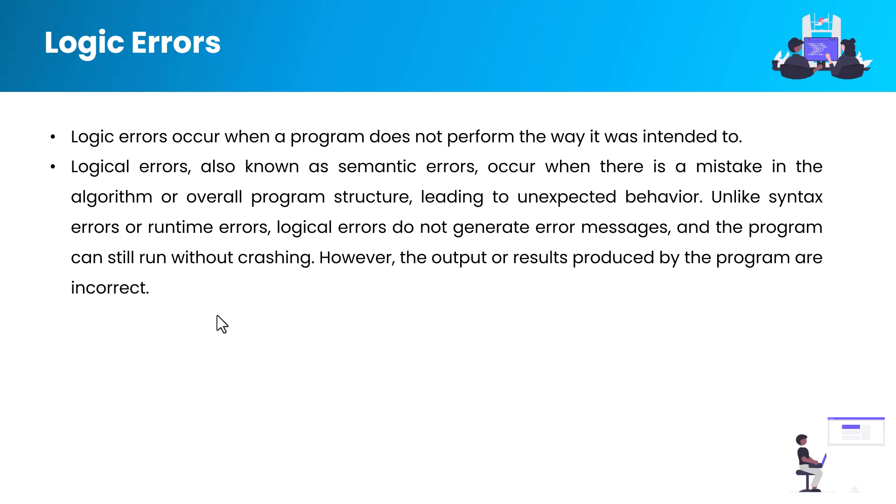For example, there is a temperature in Celsius degrees and if you want to change it to Fahrenheit degrees but you are not getting the actual output — you are getting an erroneous output — that means it is not giving the intended output. If there is no syntax error and no runtime error, that means there is a problem in the logic of the program. A logical error is also known as a semantic error, and occurs when there is a mistake in the algorithm, a problem in the formula you are trying to implement, or a problem in the overall program structure, which leads to unexpected behavior.